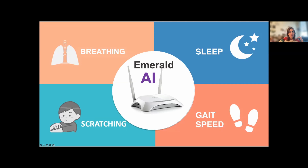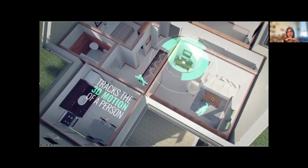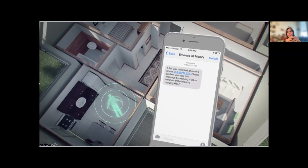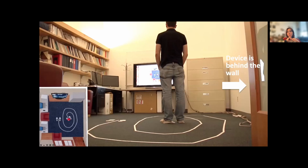We call this smart wi-fi box the Emerald Box. It is enabled with neural networks that analyze the wireless signal that bounces off people's bodies. Here you can see a home — the wireless signal spreads inside the home, bounces off our bodies, and some of those signals come back to our device. In this case it can detect a fall and add it into the clinical record, or alert the provider and caregiver.